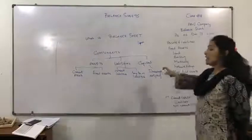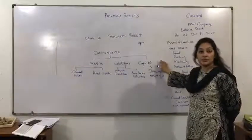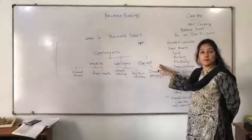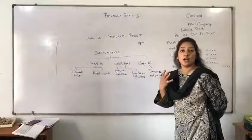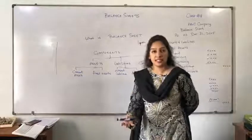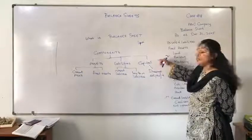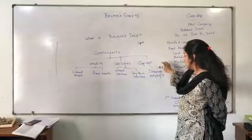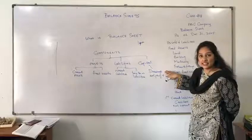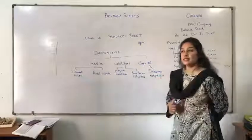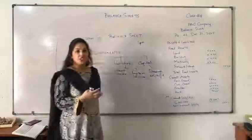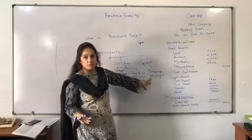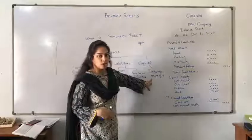Talking about capital — capital is basically defined as the cash which the owner has introduced into the business. It is the owner's cash. In capital, we have two more titles: drawings and net profit. Drawings is the owner's amount which he or she is using for personal use. And net profit is whatever profit we are gaining from the business or the organization.